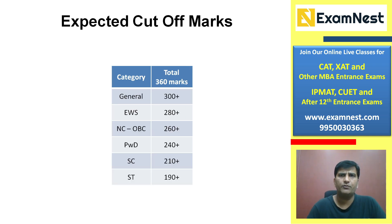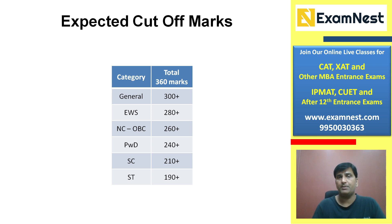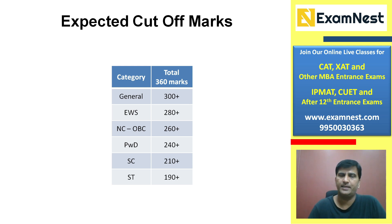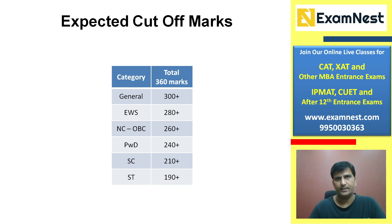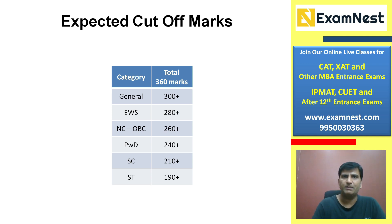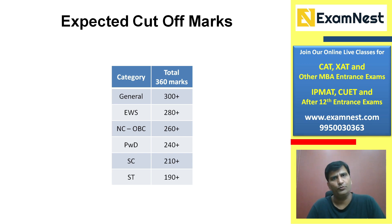Expected cut-off: General के लिए 300 plus score अगर किया है तो आपके chances हैं, क्योंकि इस बार का paper last year के मुकाबले tough था। Tentative cut-off मैंने यहाँ लिखी है। मेरी approach simple है — last year और उससे पिछले year के papers से compare करते हैं, students का feedback लेते हैं, mock paper performance देखते हैं, और एक All India average figure निकालते हैं।